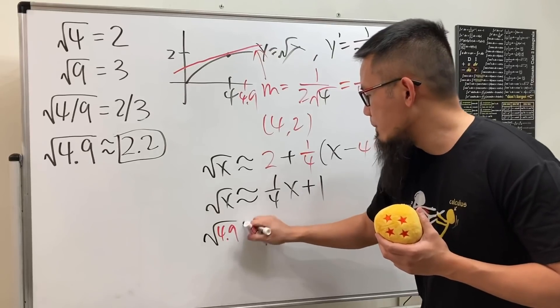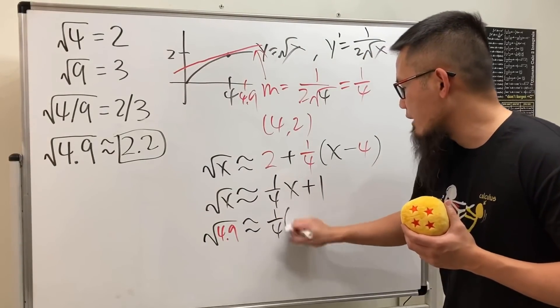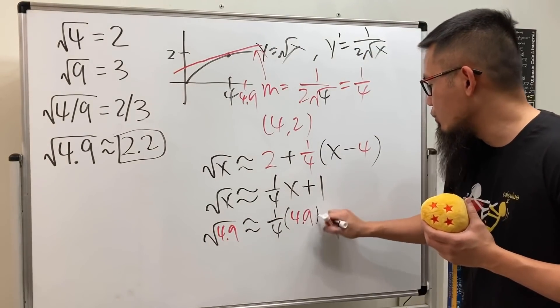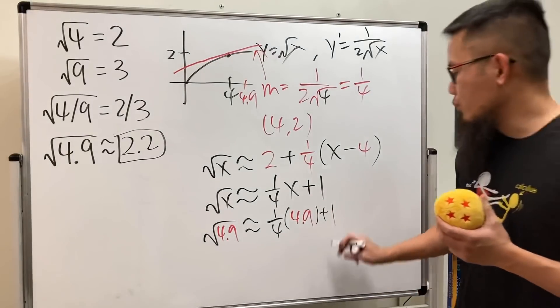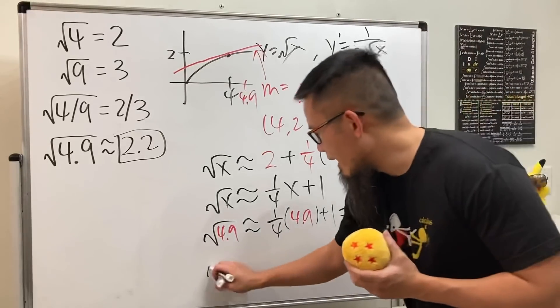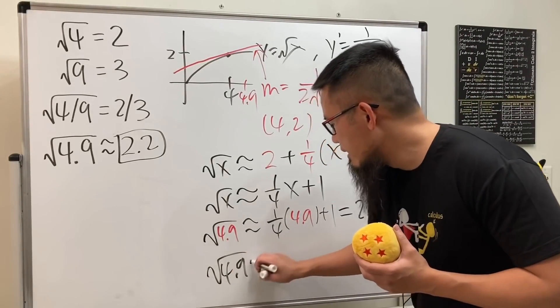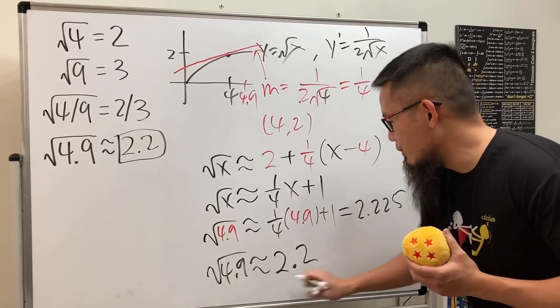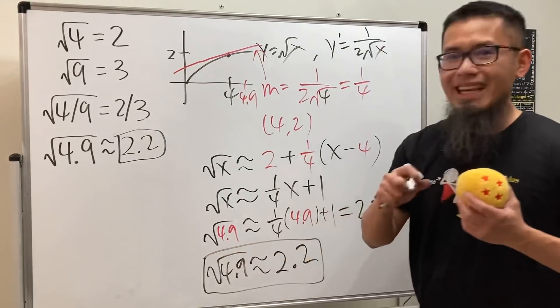...is going to be approximately (1/4) × 4.9 + 1. Work that out on your own - you'll see that this equals 2.225. Therefore, √4.9 ≈ 2.2. Told you, no joking. And that's it.